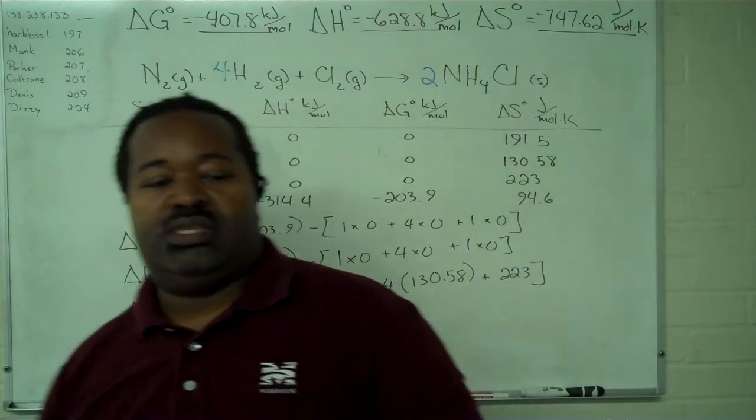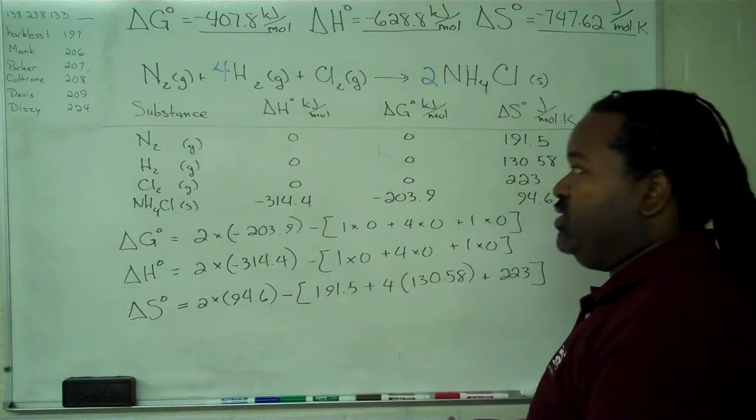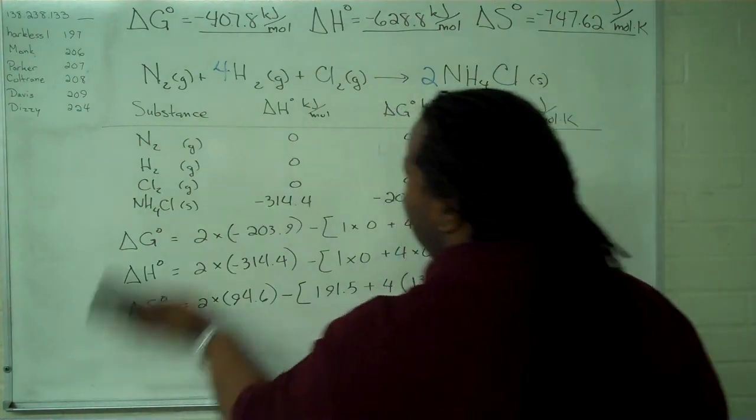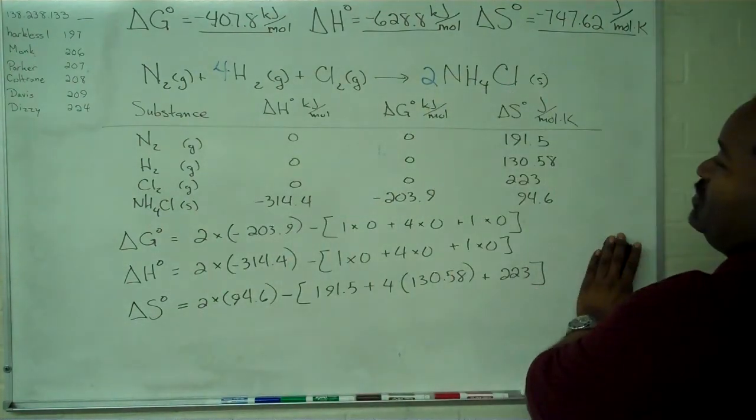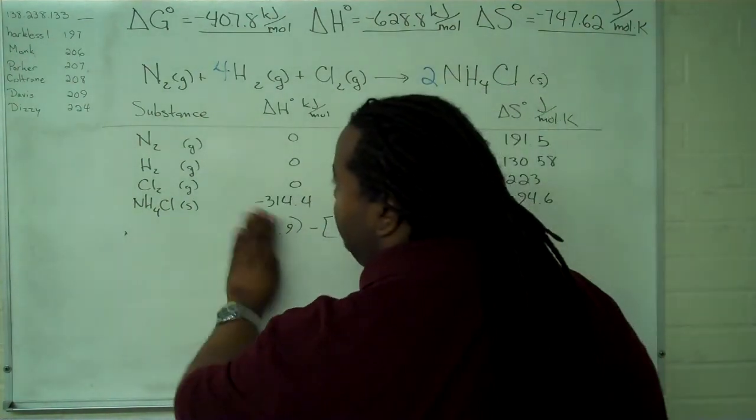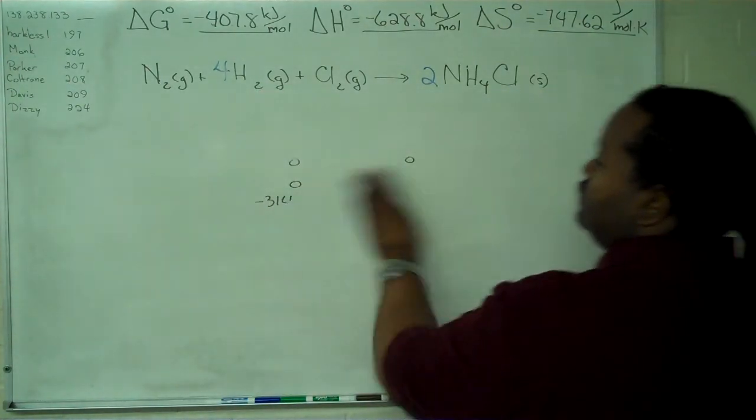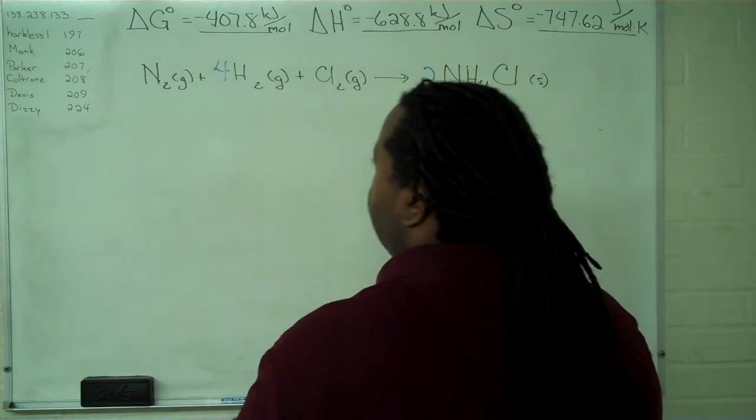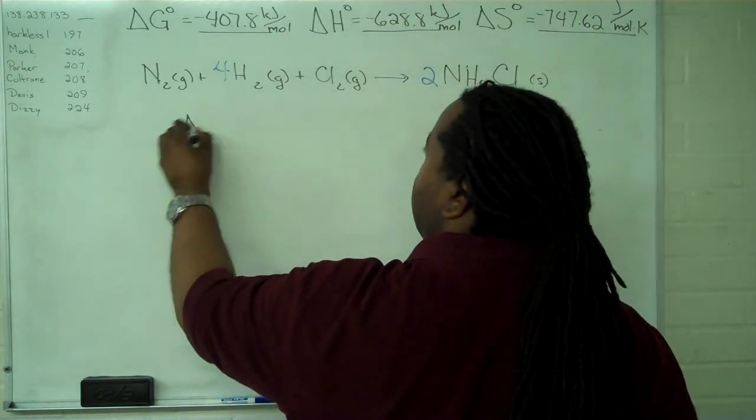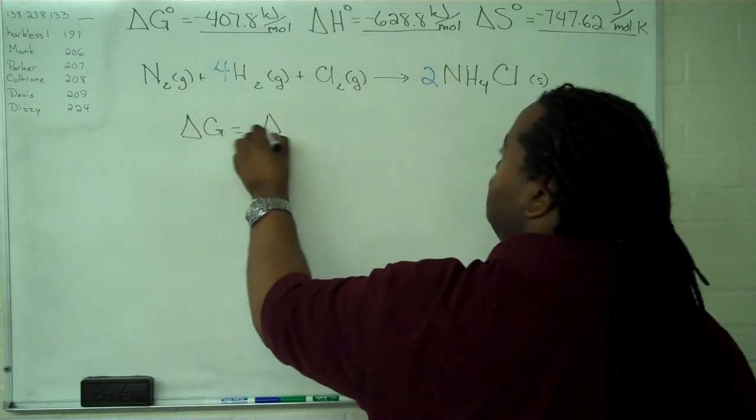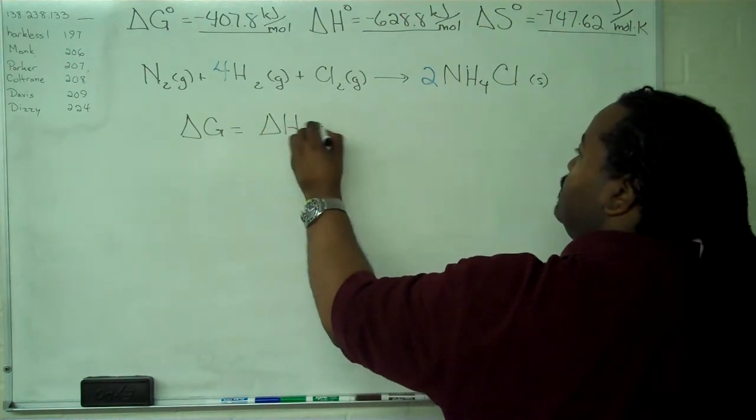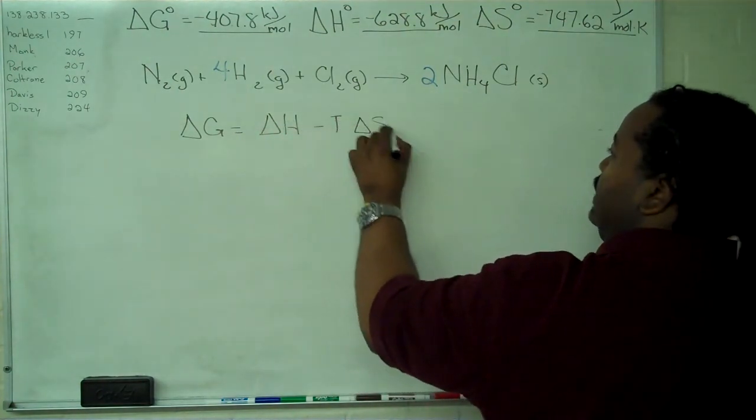Now the one thing we have left to do, now that we have our stoichiometric quantities and thermodynamic values, is to determine whether we have a temperature where this could be brought to equilibrium. We know from thermodynamics that the Gibbs energy is delta H minus T delta S.